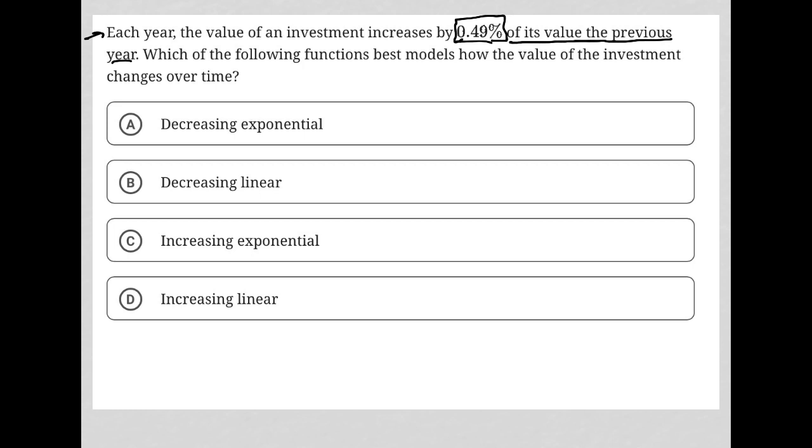The question goes on to say, which of the following functions best models how the value of the investment changes over time? Choices A and B both say that it's decreasing, which is impossible. The question tells us that the investment is increasing. So that's obviously wrong.